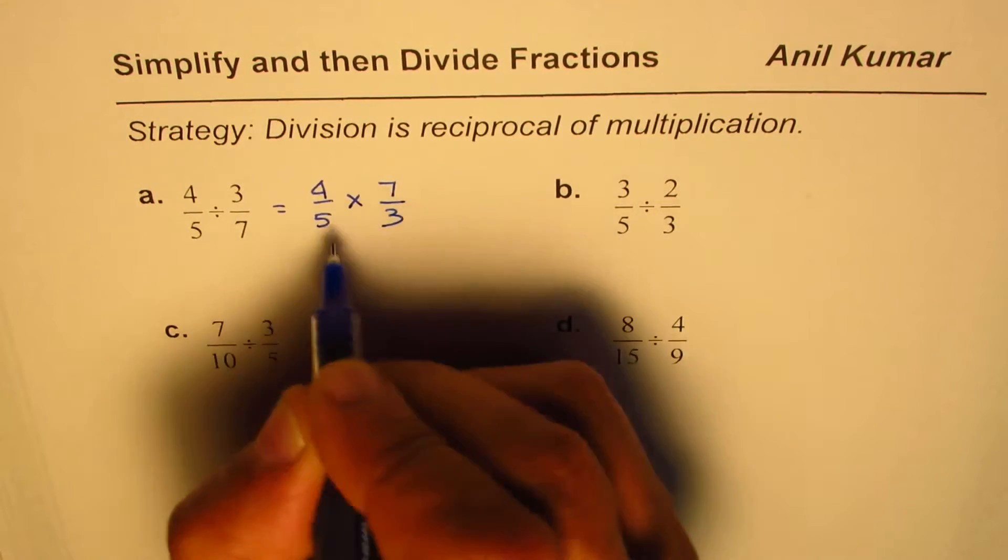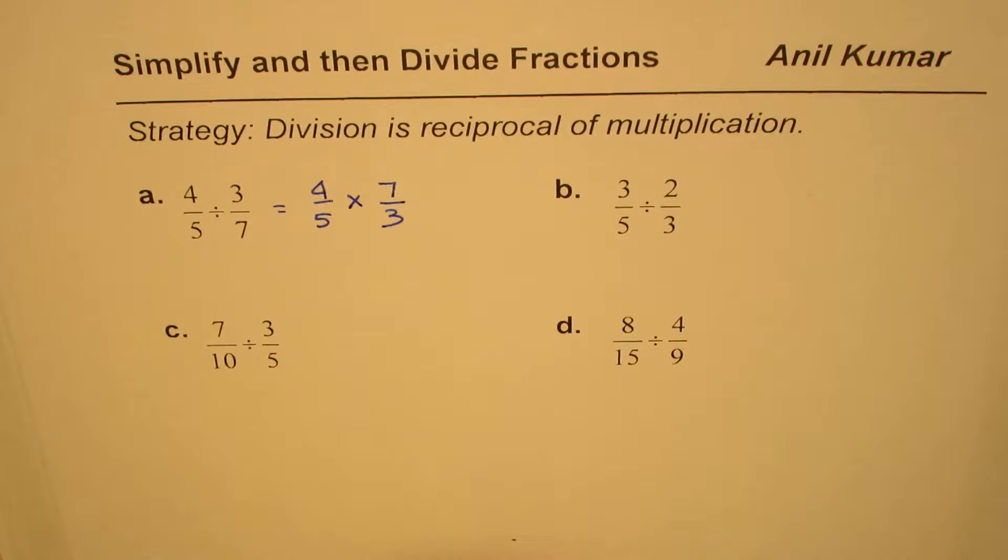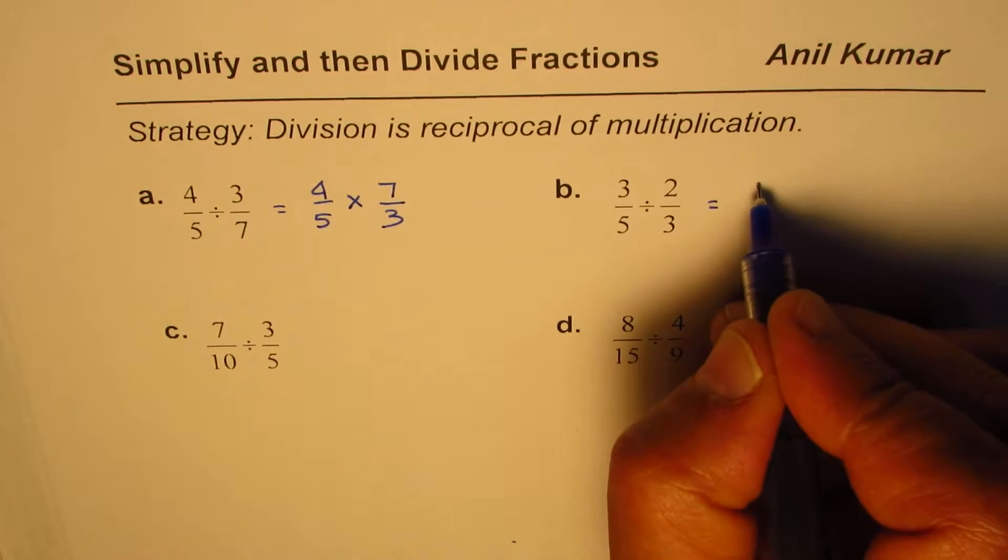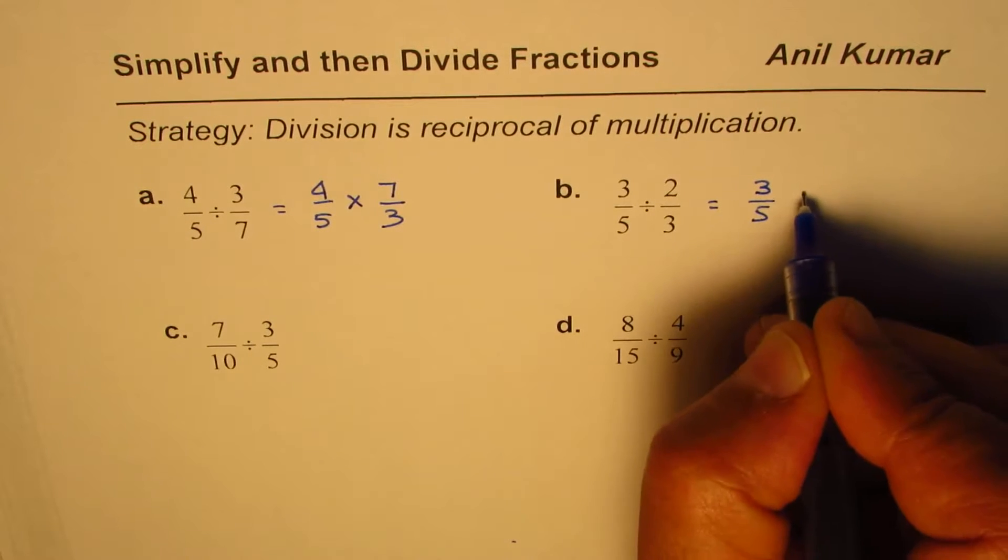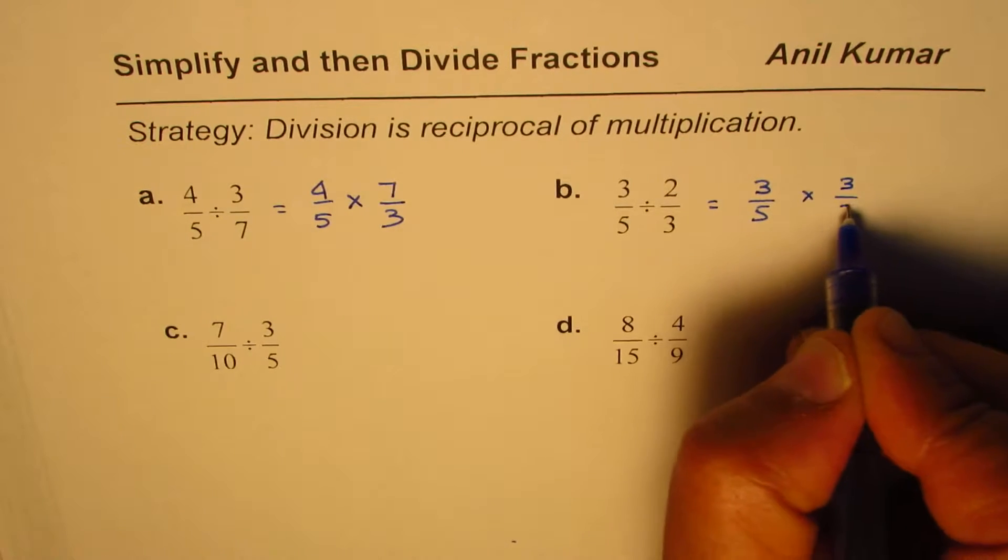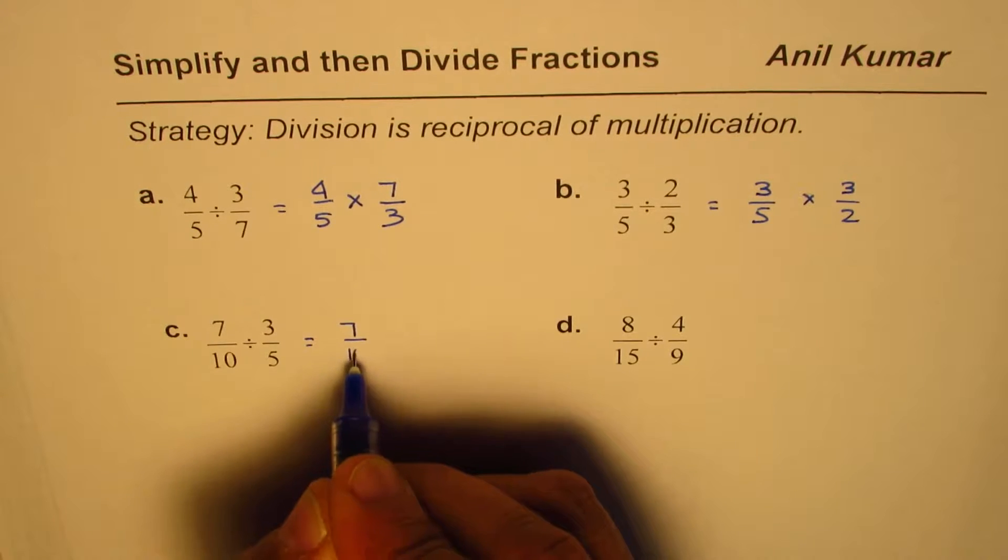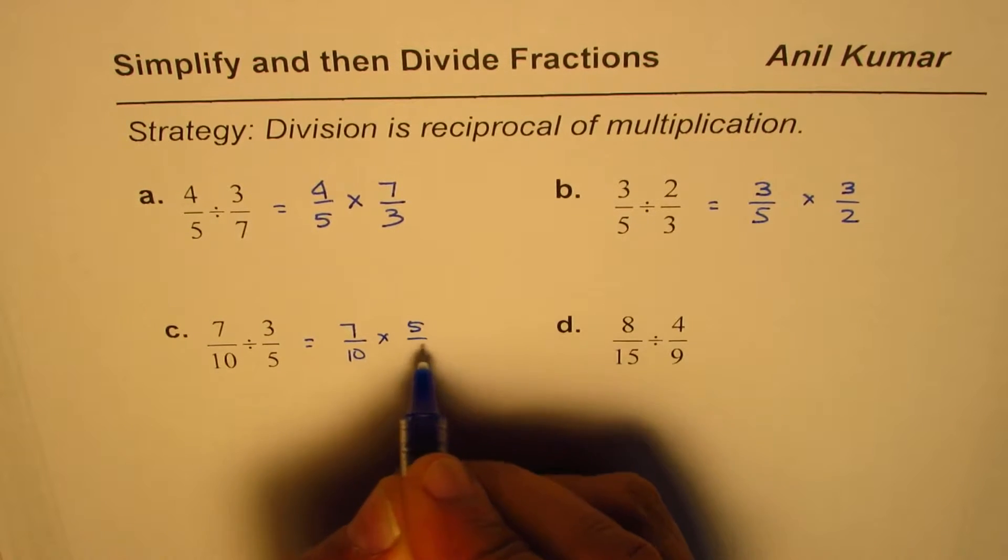That becomes our multiplication equivalent. Let's do this for all of them: 3/5 × 3/2, 7/10 × 5/3, and 8/15 × 9/4.